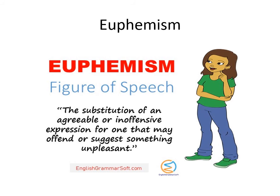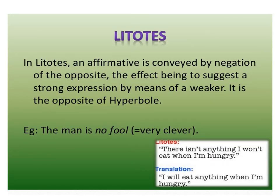Euphemism is the substitution of an agreeable or inoffensive expression for one that might be unpleasant. For example, instead of saying 'he died' or 'he kicked the bucket,' which is not the decent way a social being would communicate, we say 'he passed away' or 'he departed.' That is a more formal, decent, and sophisticated way of expressing an unpleasant situation. This is called euphemism.